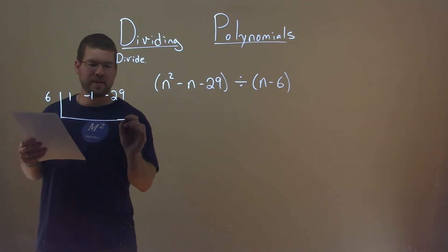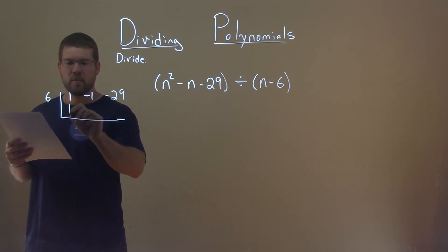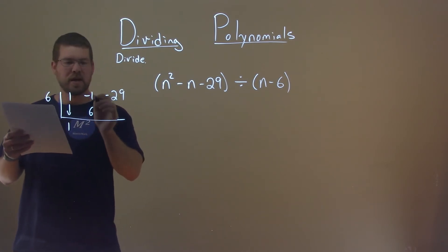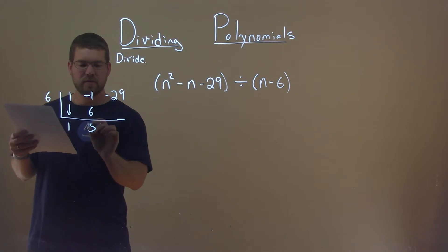So now we can start our synthetic division. Bring down the 1 right here, 6 times 1 is 6, negative 1 plus 6 is positive 5.